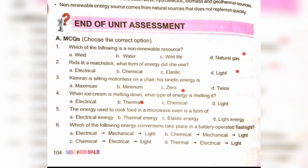When ice cream is melting, what type of energy is causing it? Option B: thermal energy. The energy used to cook food in a microwave is a form of thermal energy, option B. Which of the following energy conversions takes place in a battery-operated flashlight? Chemical to electrical, and then light — option C.